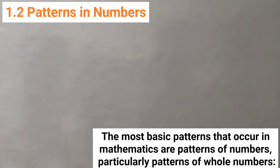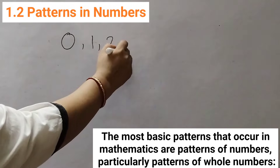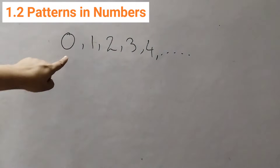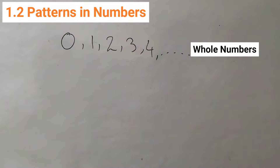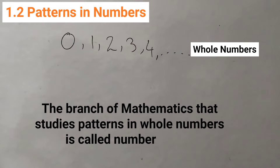The most basic pattern that occurs in mathematics are patterns of numbers, particularly the patterns of whole numbers. Whole numbers start from 0, then 1, 2, 3, 4 and so on. The branch of mathematics that studies patterns in whole numbers is called number theory.